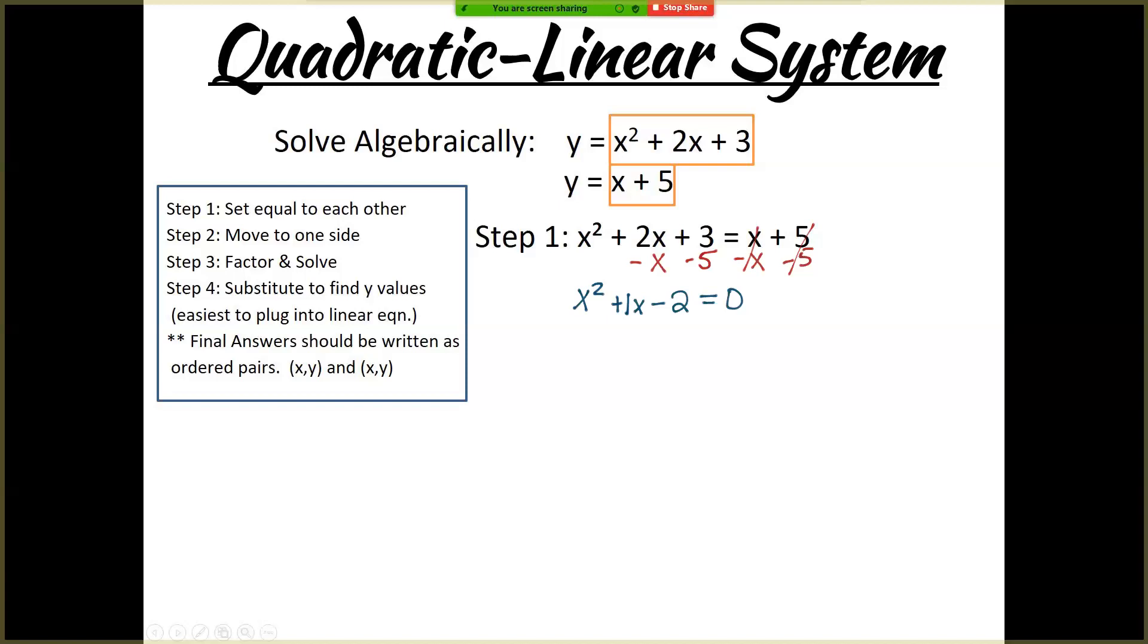So now I've got a quadratic set equal to 0. I want to check to see if I can factor it. First thing we check when we factor is, is there a greatest common factor? So greatest common factor of x squared, x, and negative 2, there isn't one. So we're going to put this into our asterisk. We're going to factor this. Keep in mind, a is 1, b is 1, and this time c is negative 2.